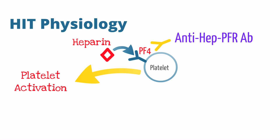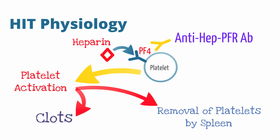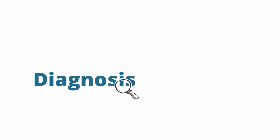This antibody binds the heparin platelet factor complex. The heparin PF4, or platelet factor receptor antibody, when bound to its target, can activate other platelets. The activation of platelets can lead to thrombi or clot formation, as well as consumption of these platelets by the body.